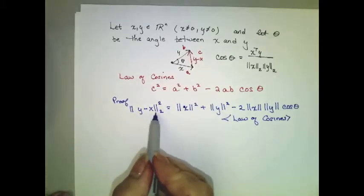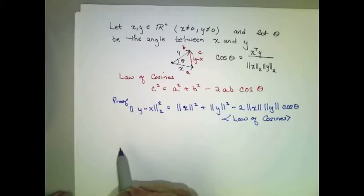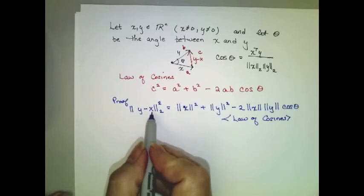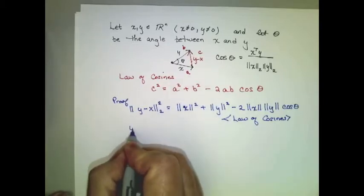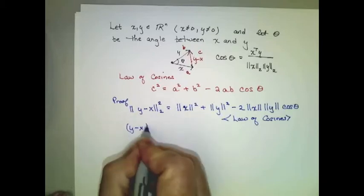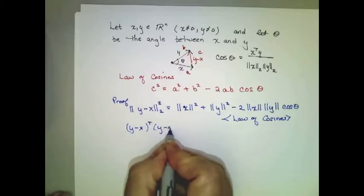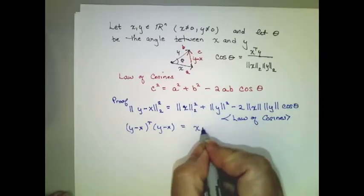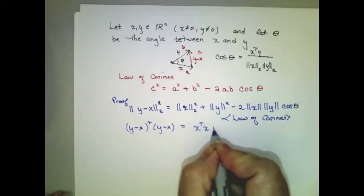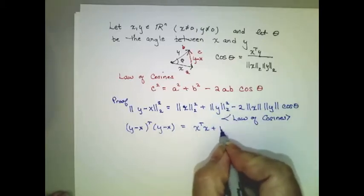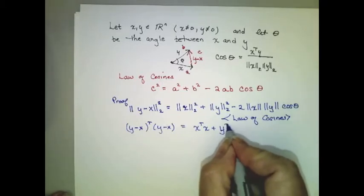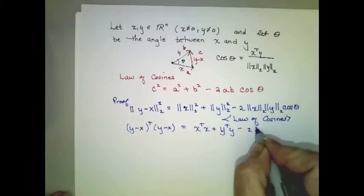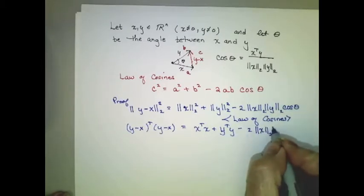So, what do we know about the length squared? It's actually just the dot product. So, the length of y minus x squared is actually the dot product of y minus x with itself. The length of x squared is the dot product of x with itself. Similarly, the length of y squared is the dot product of y with itself. And we end up with this expression.